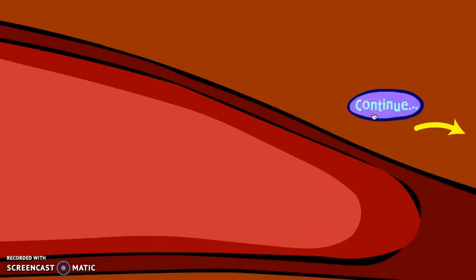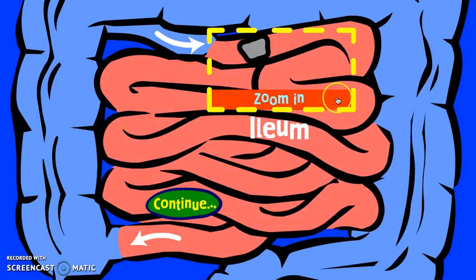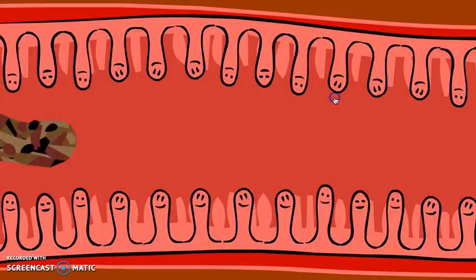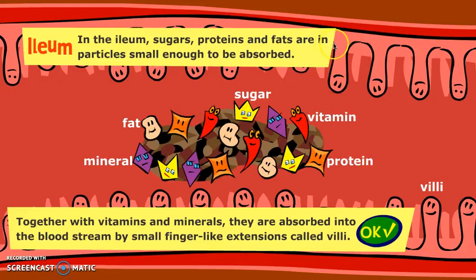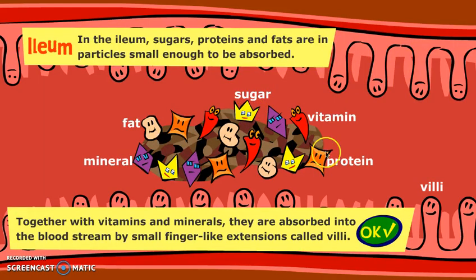Once this process of digestion has happened, we move into the ileum of the small intestine. You can see the finger-like projections known as villi, and we now have individual sugar particles, fatty acids, amino acids, vitamins, and minerals — all ready to be absorbed through the walls of the ileum and into the bloodstream.